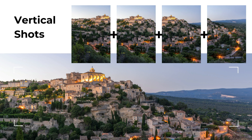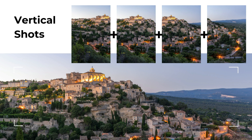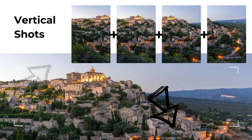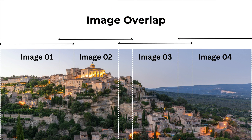Just like in this example, you can see that this panorama was captured with four vertical shots. They were stitched together and it offers more sky, more of the landscape, and the picture itself would definitely have a higher resolution.